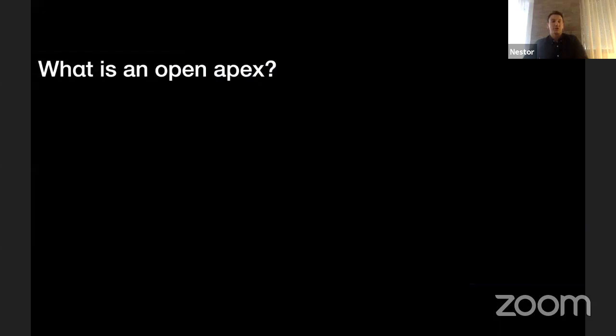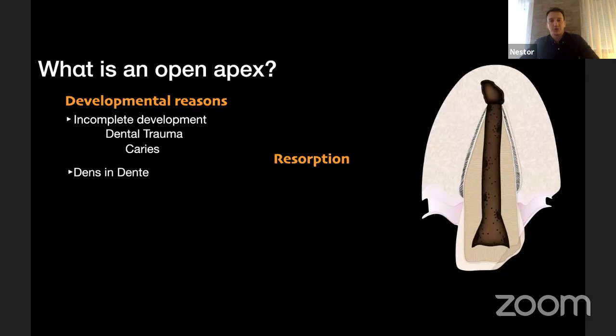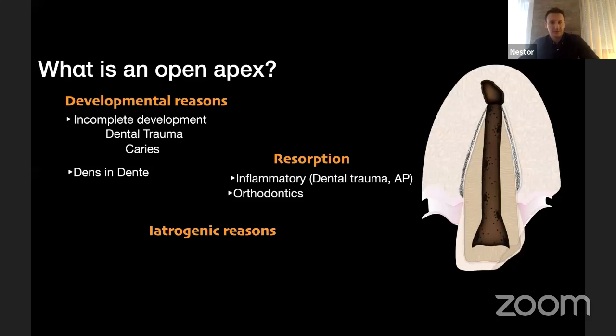The first question is: what is actually an open apex? The term open apex is often described as an exceptionally wide apical foramen in which the preparation of an apical stop is impossible, or very difficult, to achieve. There can be several reasons that create an open apex situation — for example, developmental reasons, resorption, or iatrogenic reasons.